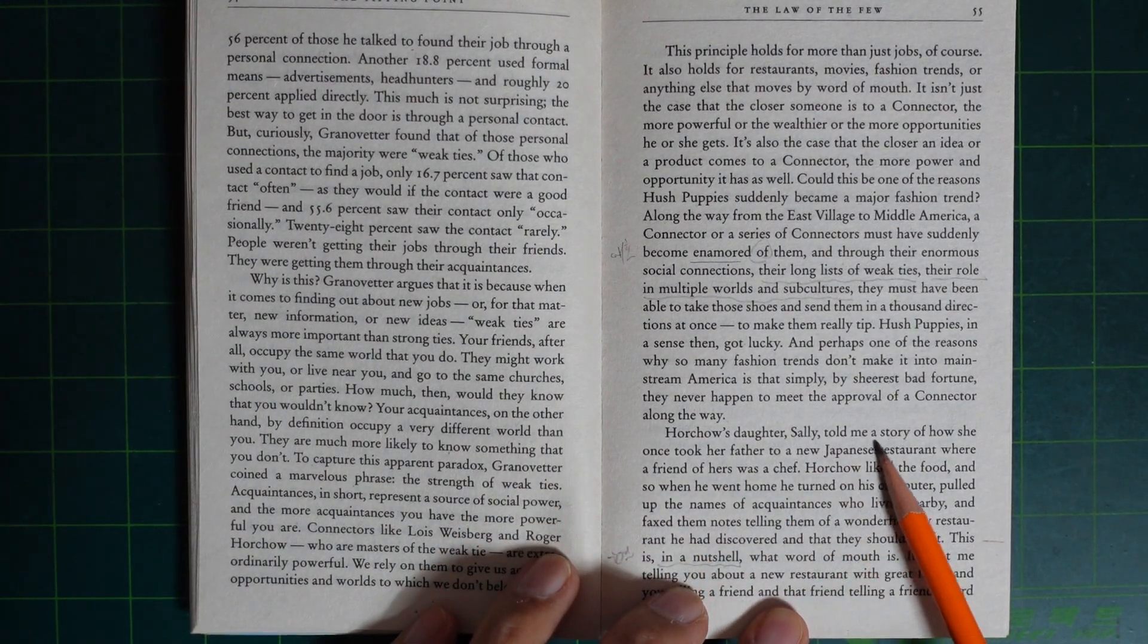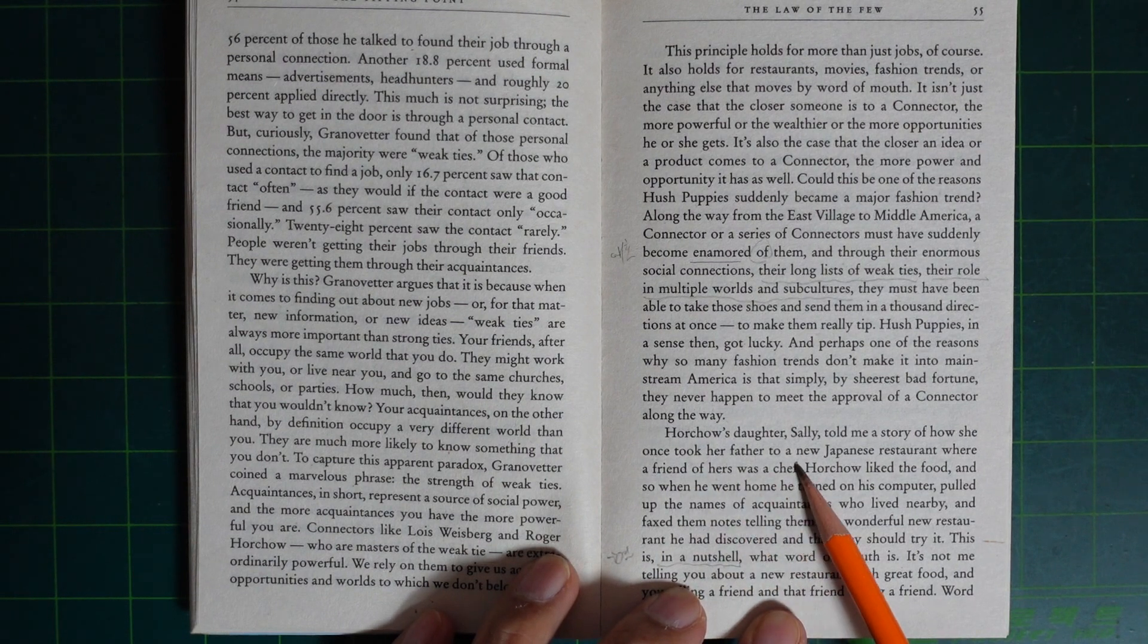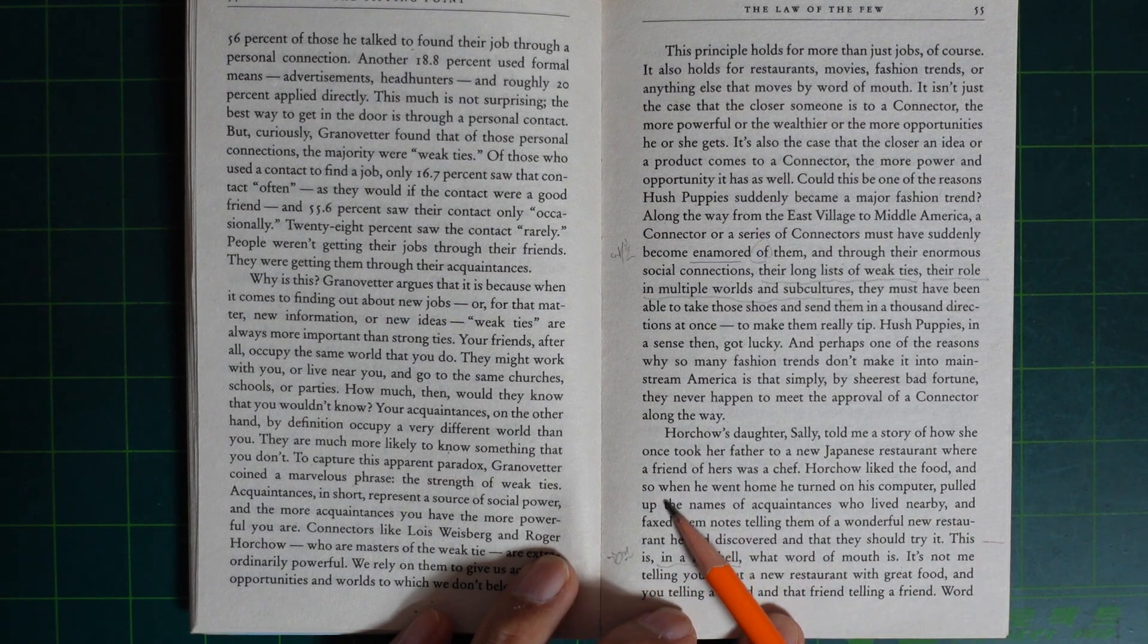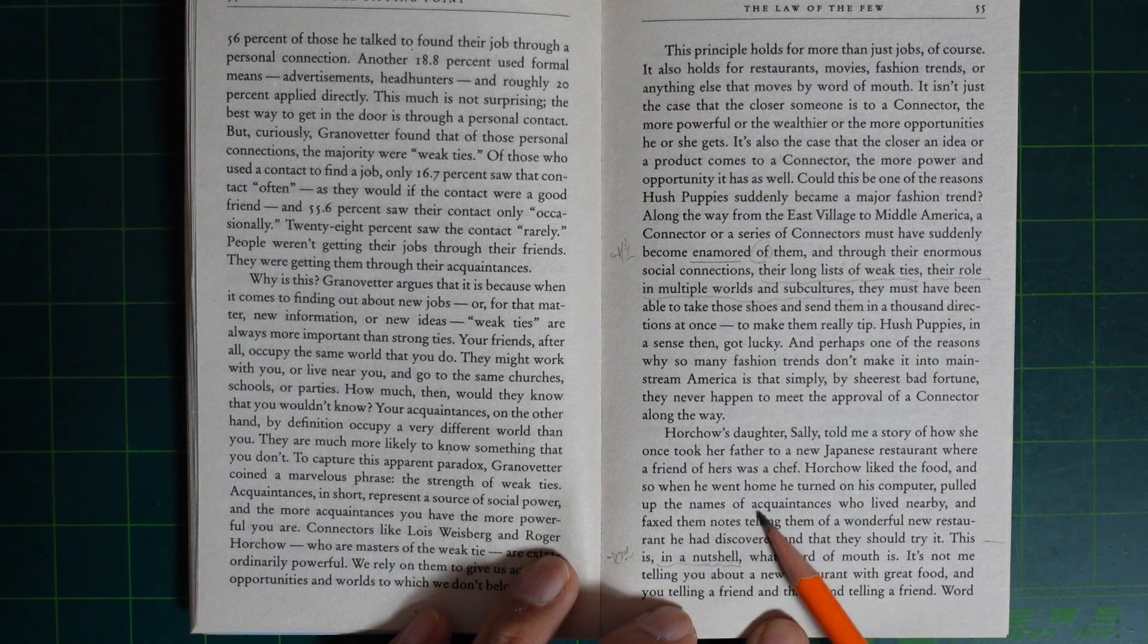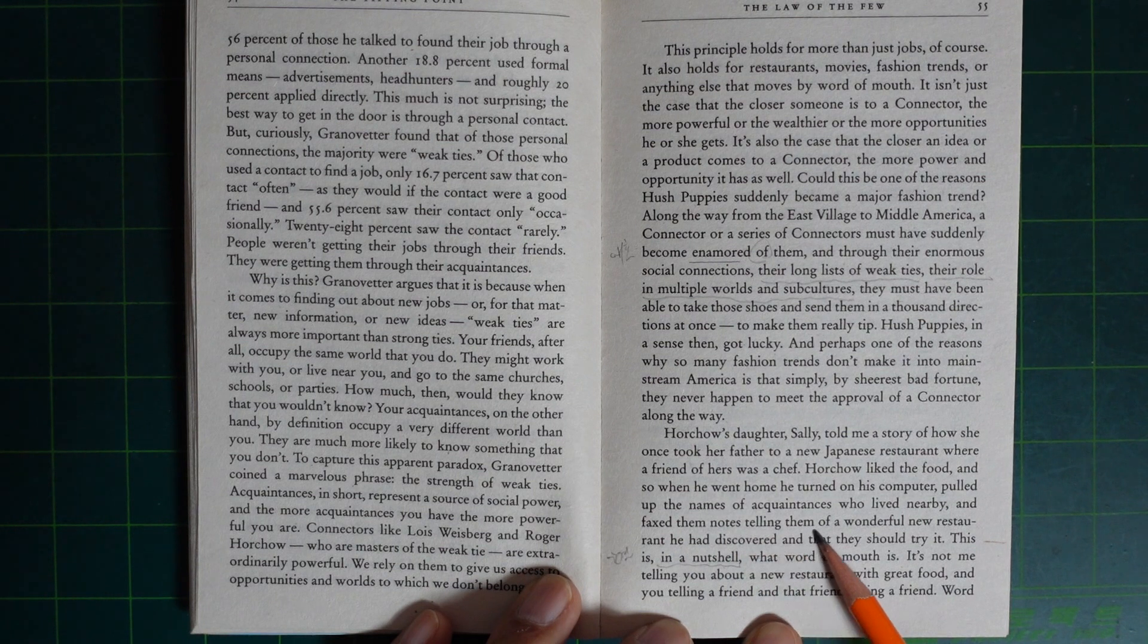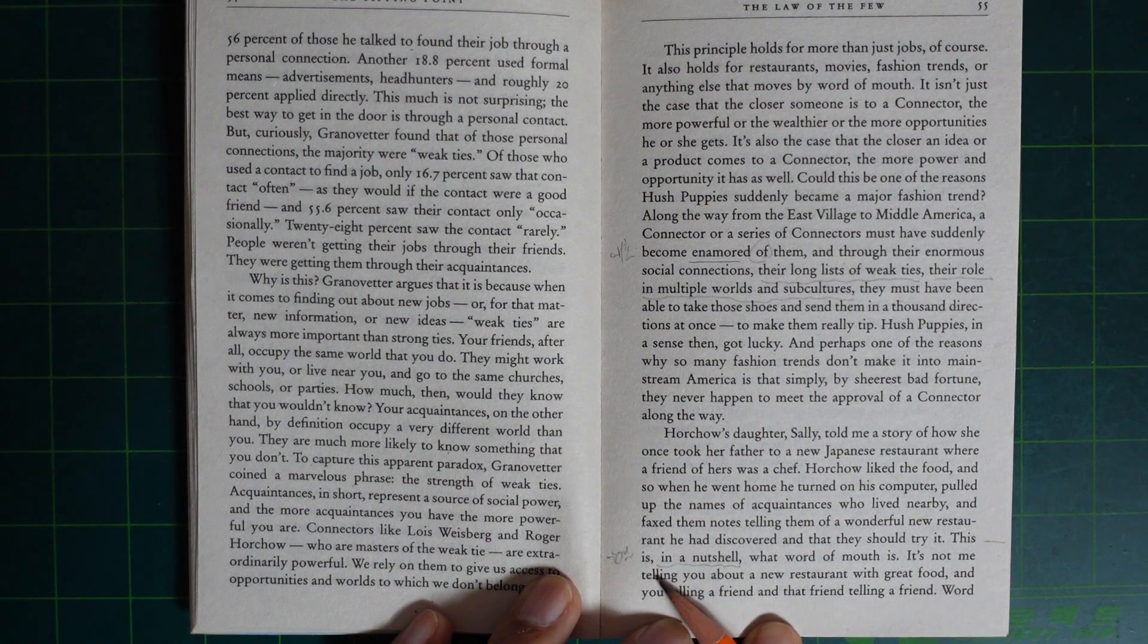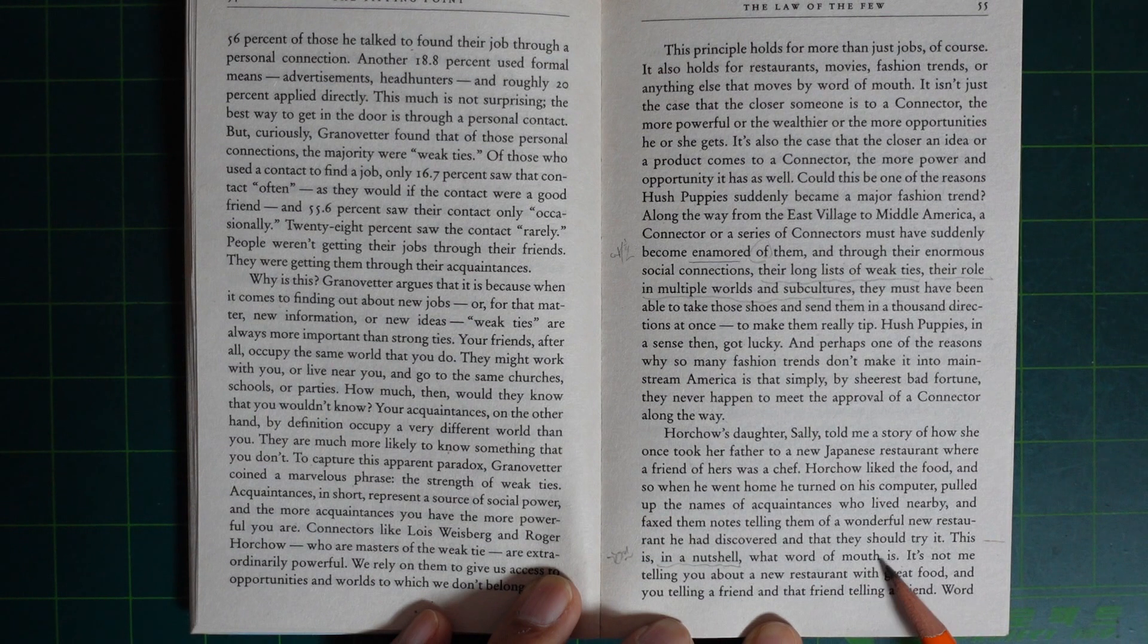Horchow's daughter Sally told a story of how she once took her father to a new Japanese restaurant where a friend of hers was a chef. Horchow liked the food, and so when he went home he turned to his computer, pulled up the names of acquaintances who lived nearby and emailed them all, telling them of a wonderful new restaurant he had discovered and that they should try. This is, in a nutshell, what word of mouth is.